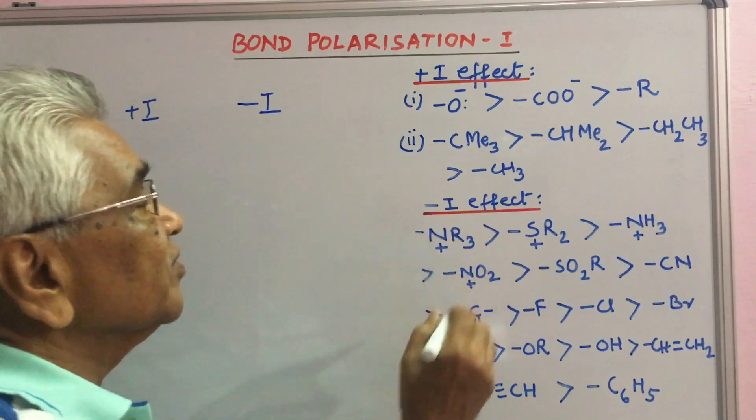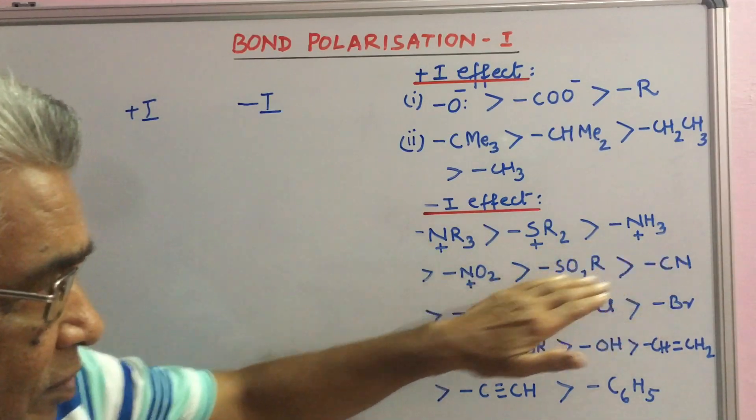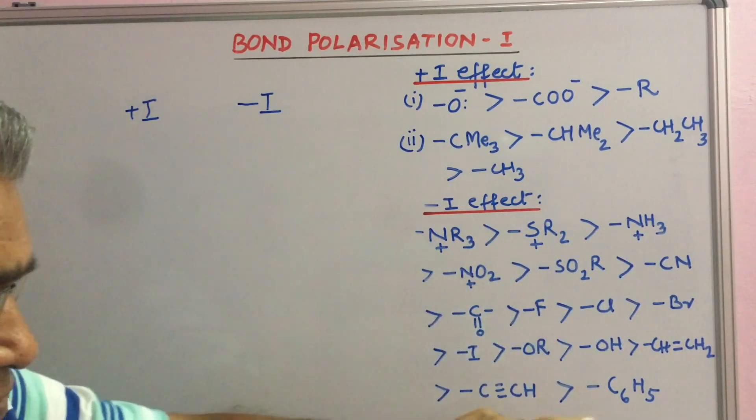Groups with minus I effect are these. You can see, this is the weakest.